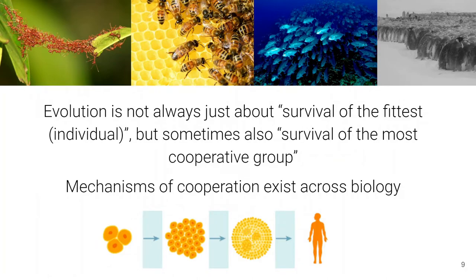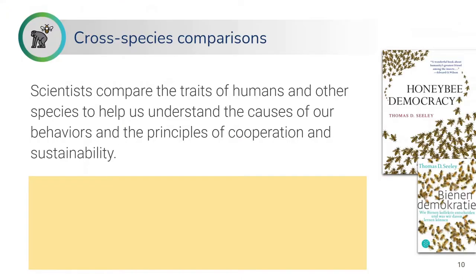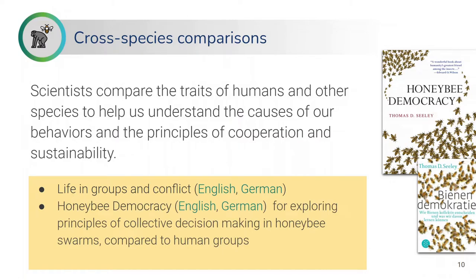Overall, evolution is not just about survival of the fittest individual, but sometimes also survival of the most cooperative group. We can look at the different kinds of mechanisms of cooperation that exist across biology. Even within our own body, we have trillions of cells cooperating, keeping us alive and functioning. We can think about how the different mechanisms — such as our immune system, the nervous system, the blood circulation — relate to some of those principles that allow cooperation.